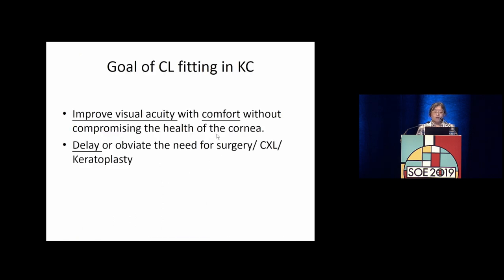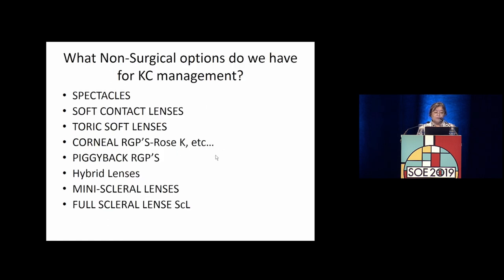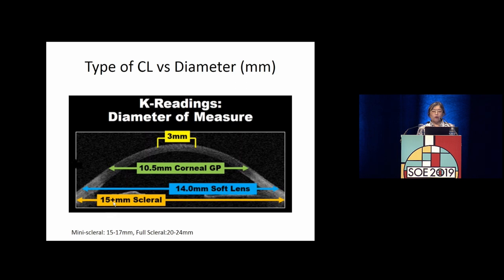Non-surgical options include spectacles, soft contact lenses, toric contact lenses, the Rose K RGP family, piggyback lenses, hybrids, mini-scleral lenses, and full scleral lenses. Contact lens types vary by diameter: corneal RGPs are approximately 10 mm, soft lenses extend to about 14 mm, and scleral lens families extend beyond 15 mm.